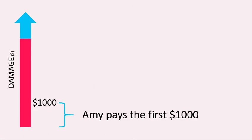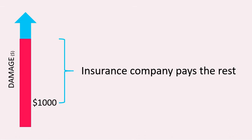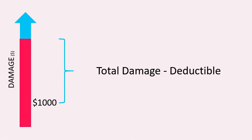What the insurance company is actually paying is equal to the total damage — or the total loss — minus the deductible. As you can see, the full amount is eventually paid: Amy pays up to the deductible, the first $1,000, and then everything above that is paid by the insurance company. In total, all the payments made will allow Amy's house to be completely back to its original condition — they'll pay for everything.